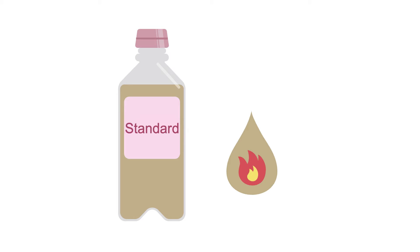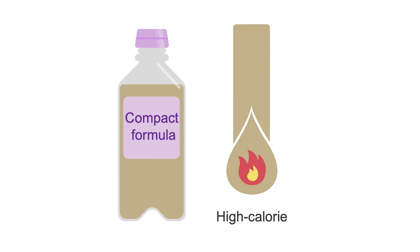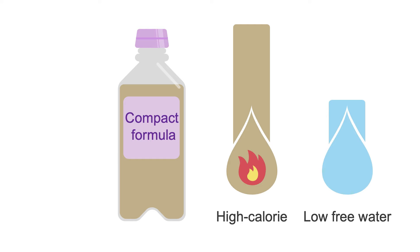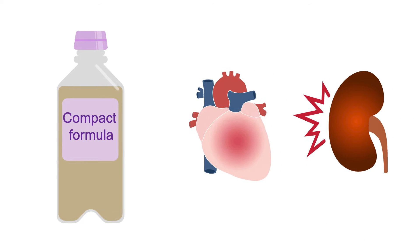Standard or house tube feeding formulas provide between 1 and 1.5 calories per ml and are appropriate for the majority of patients. Formulas with a higher calorie density, also referred to as more compact formulas, have a lower free water content and are used for specific disease states that require fluid restrictions, such as heart failure or chronic kidney disease. They can also be used for patients who have issues tolerating large volumes of formula.